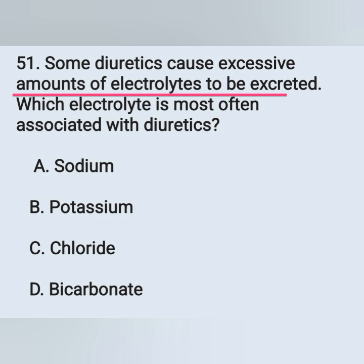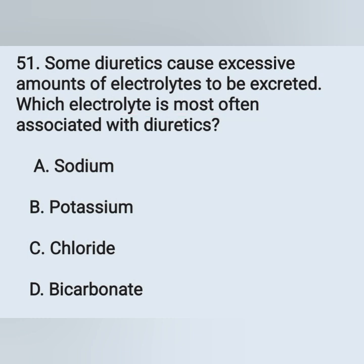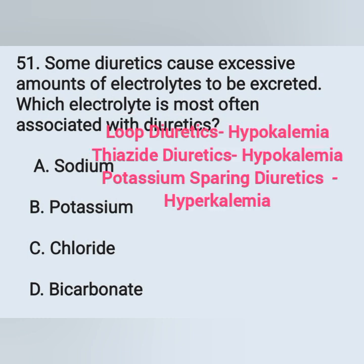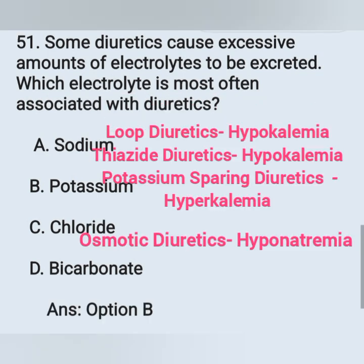Question 51: Some diuretics cause an excessive amount of electrolyte to be excreted. Which electrolyte is most often associated with diuretics? Option A: Sodium, Option B: Potassium, Option C: Chloride, Option D: Bicarbonate. The electrolyte associated with diuretics is potassium — Option B is the correct answer.